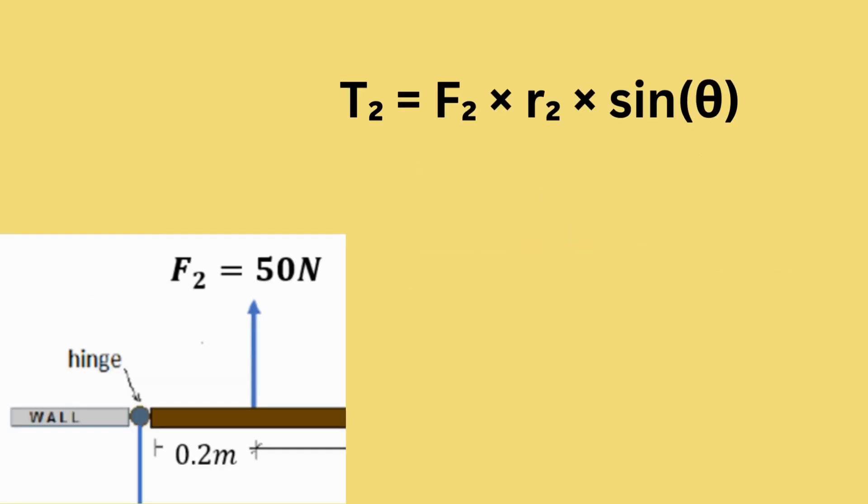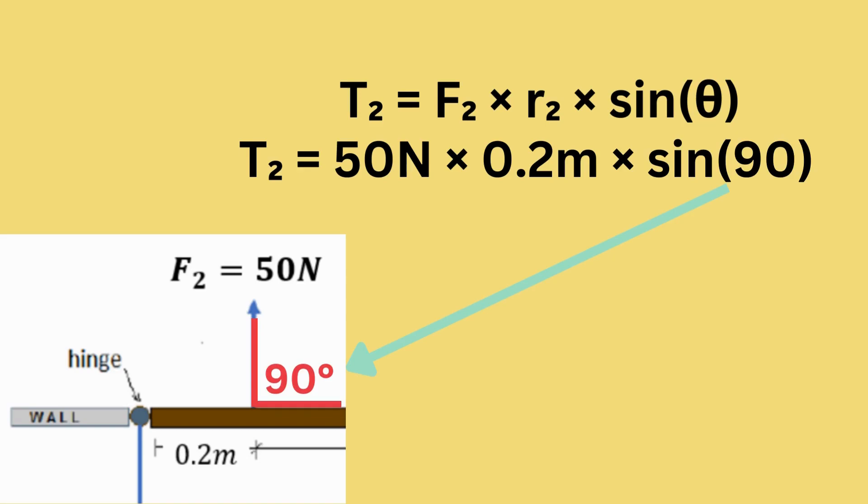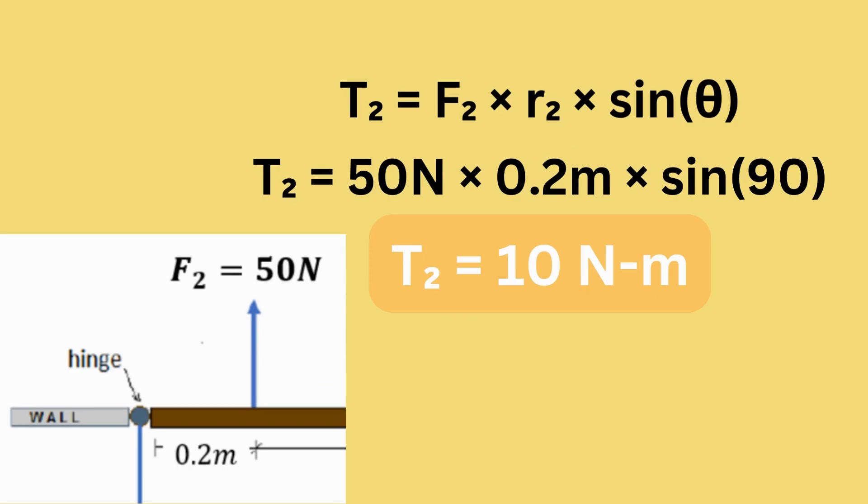Let us solve torque 2. For torque 2, T2 equals F2, which is 50 newtons, times 0.2 meters, which is the distance between the force and the hinge, times sine 90, because the force is applied perpendicular to the door. Finally, we can solve for T2 and get 10 newton meters.